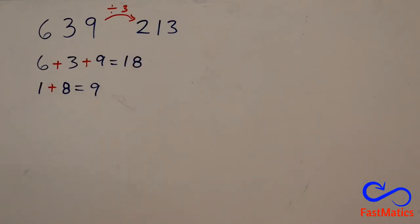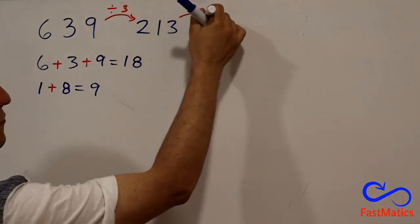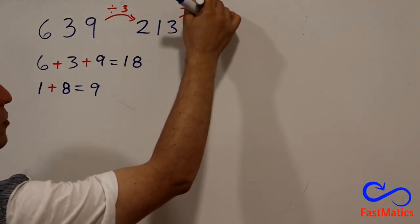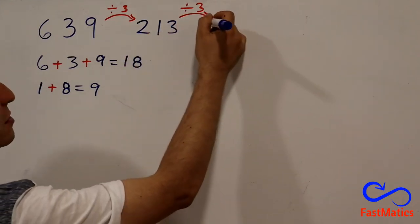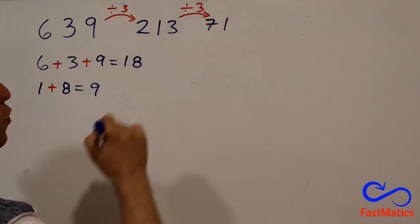6! 213 is a result of the table of 3. So, we can divide 213 by 3, and that is going to give us 71.